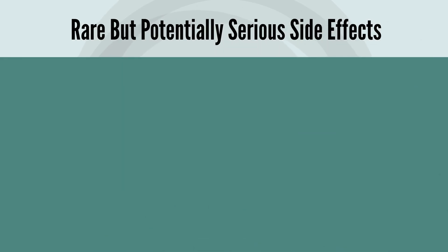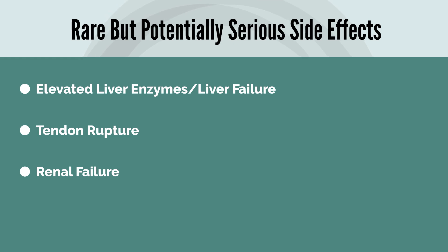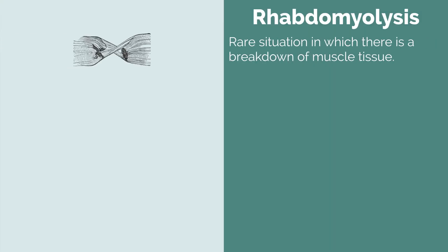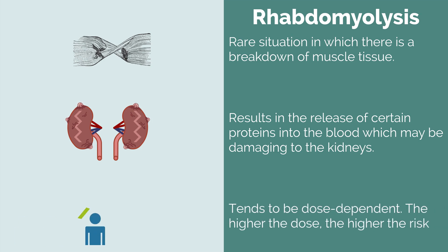The next set of side effects are the potentially serious ones. The good thing is that those also tend to be very rare, typically in the 1% or less range, and these include elevated liver enzymes or liver failure. Sometimes there may be a tendon rupture, renal failure, and that renal failure may sometimes be attributed to a condition called rhabdomyolysis — a rare situation in which there is a breakdown of muscle tissue, resulting in the release of certain proteins into the blood that may be damaging to the kidneys. Rhabdomyolysis is very rare and tends to be dose dependent, meaning the higher your dose, the higher your risk.